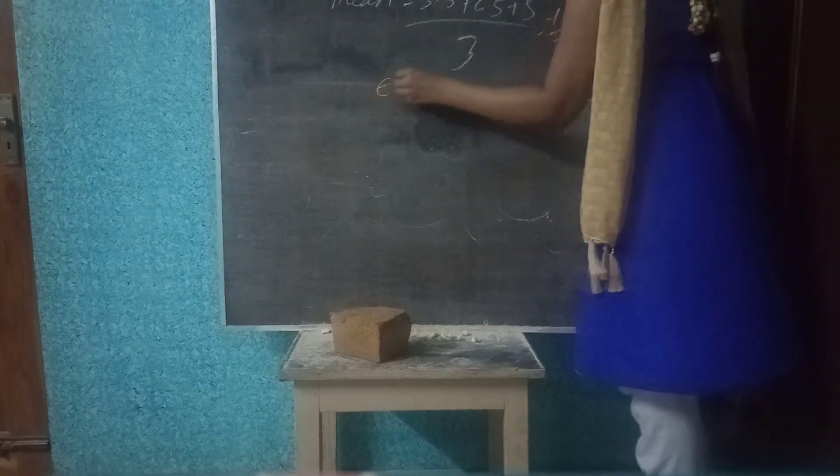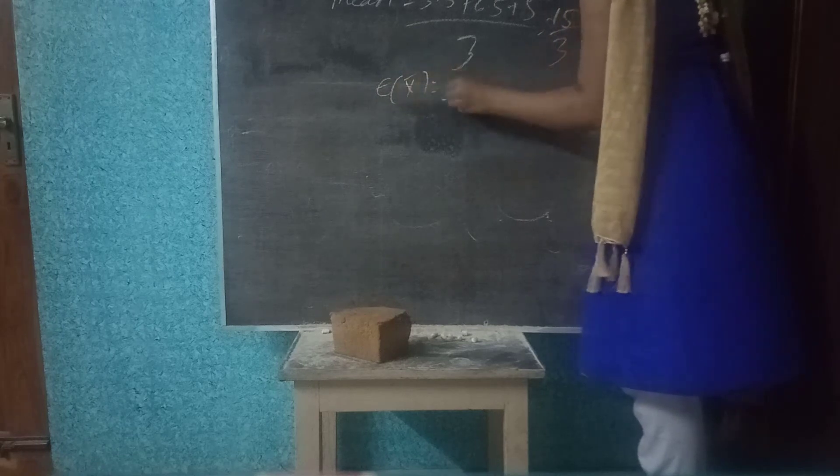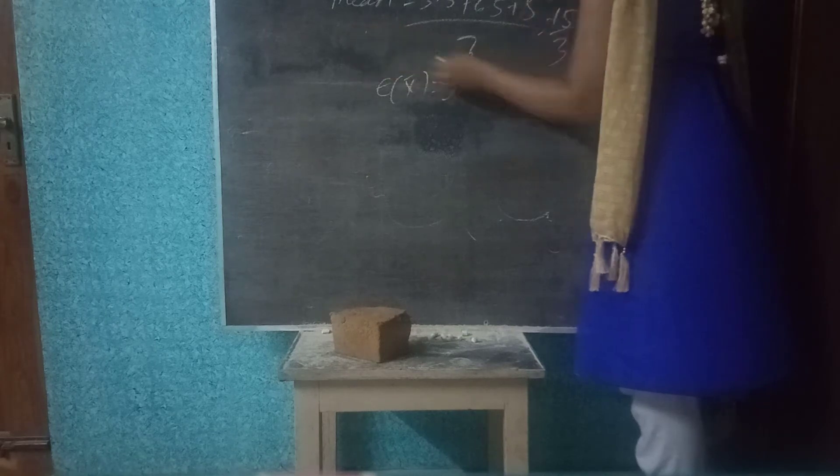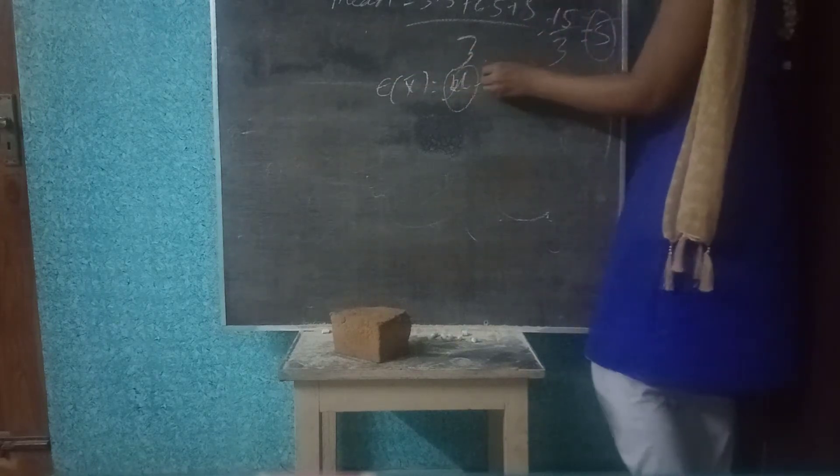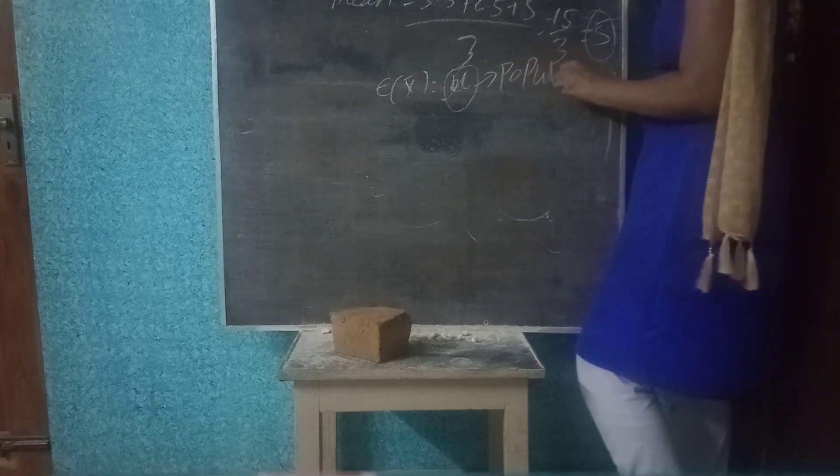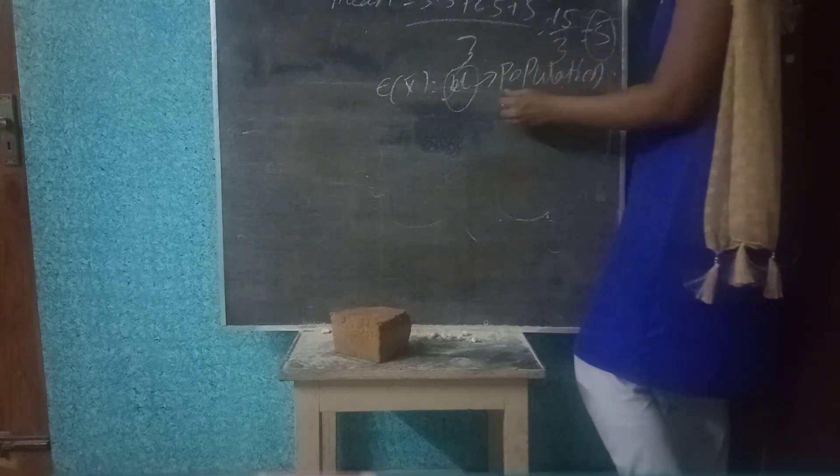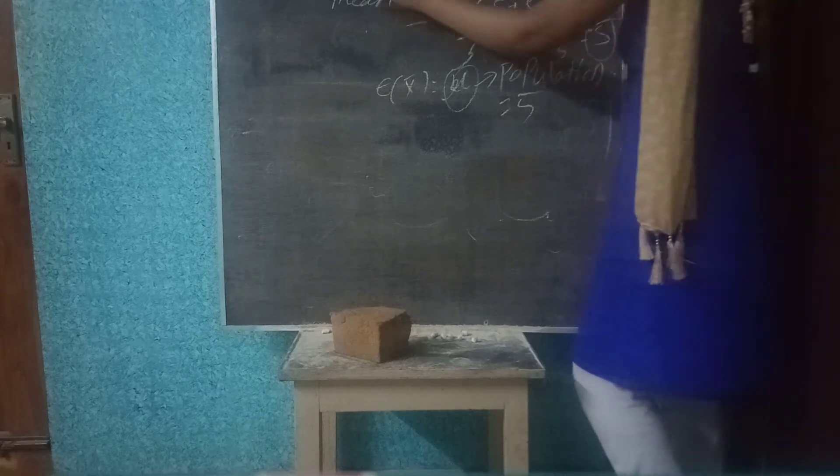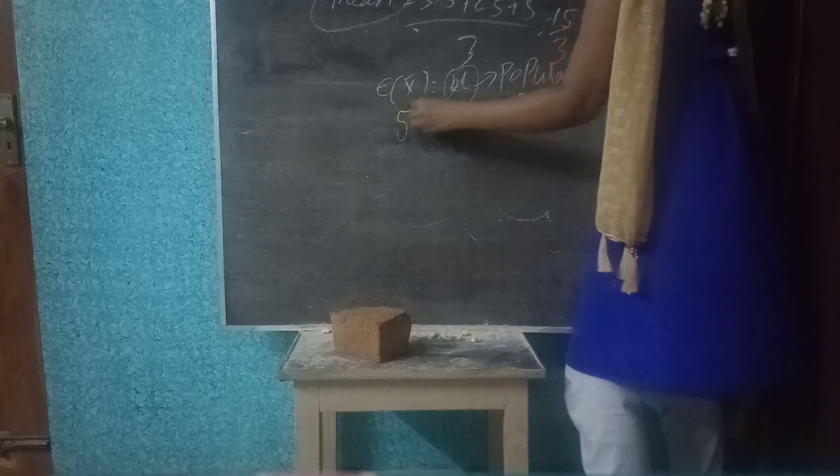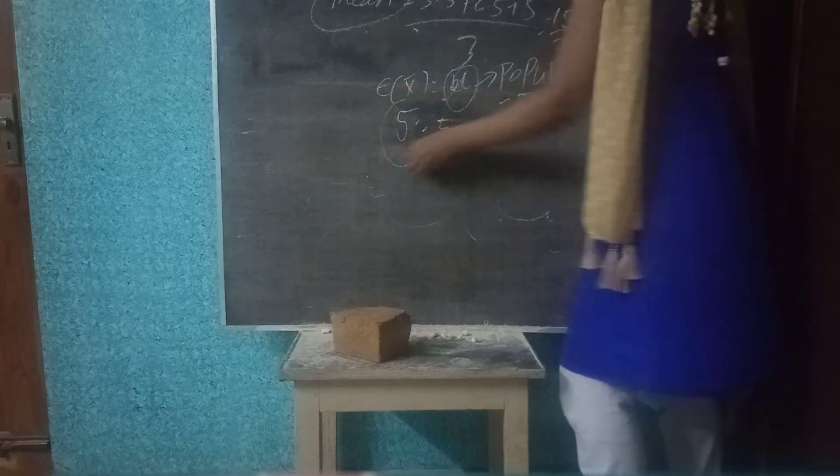What we can say is that the E of x bar is equal to mu. So in that we are calculating the population mean, the population mu. Population mean value is 5. So the average mean calculation is 5. So 5 equals to 5. Hence proved.